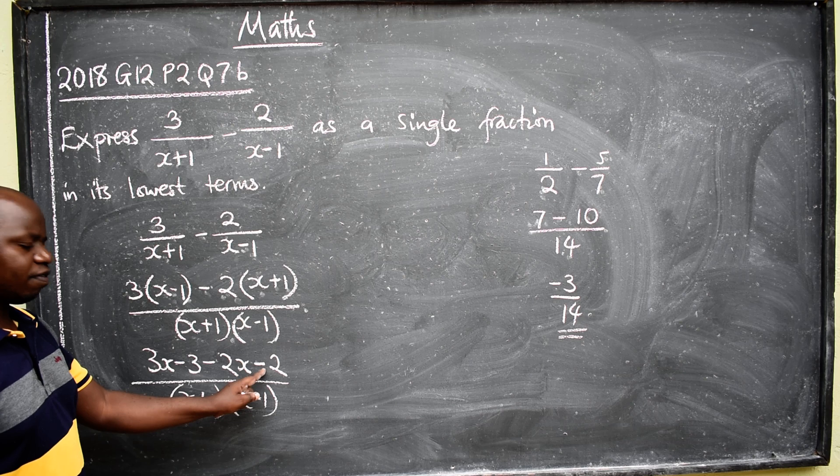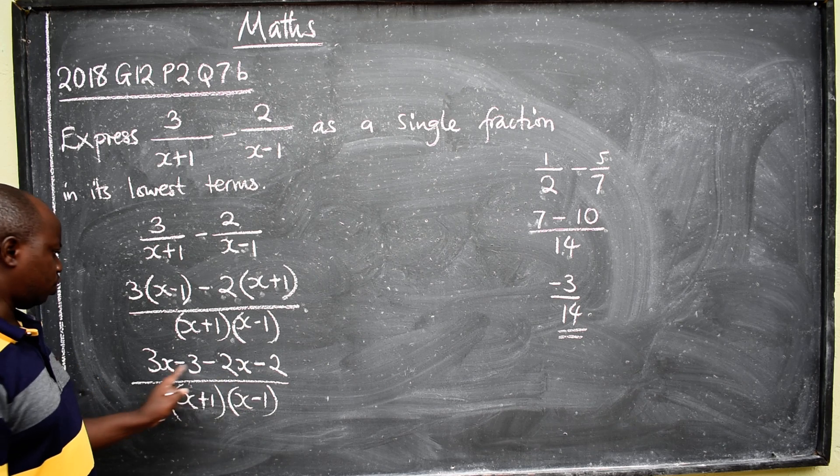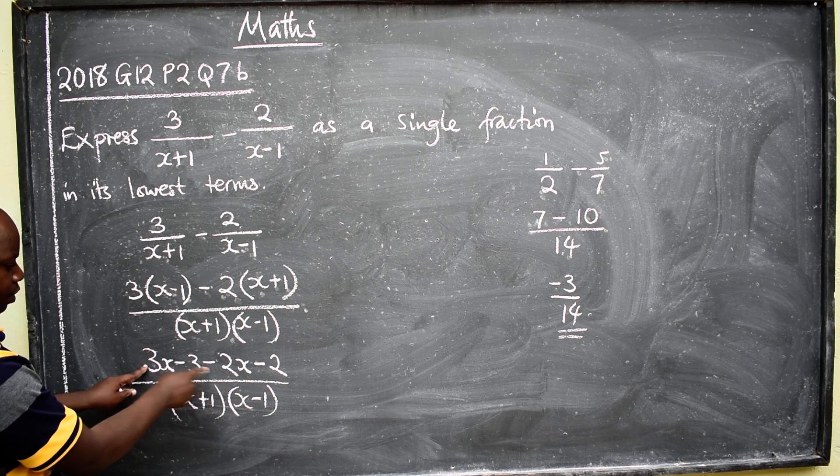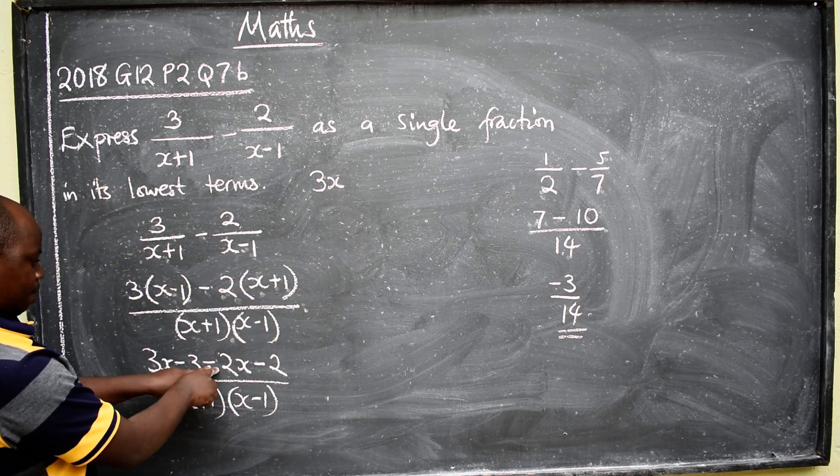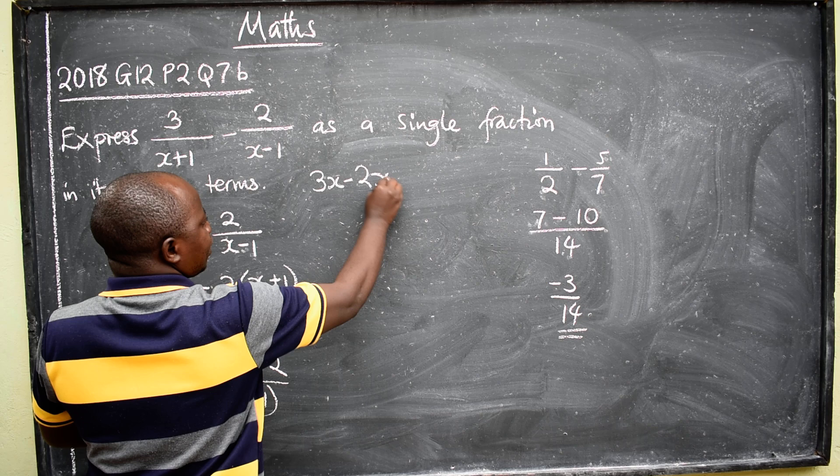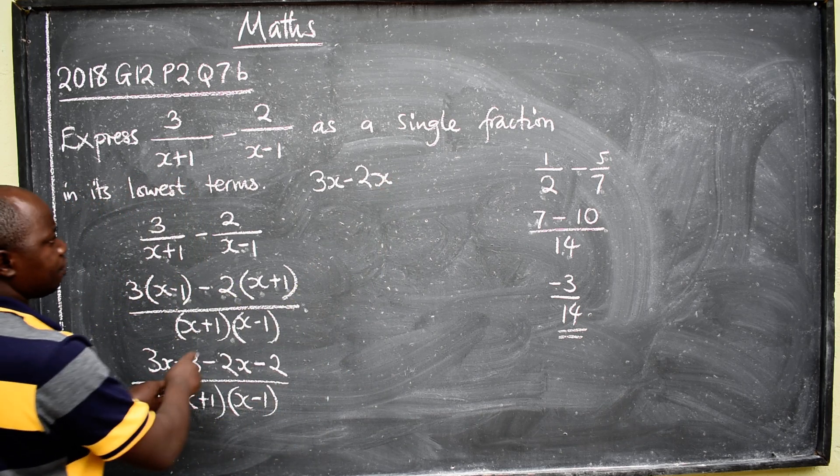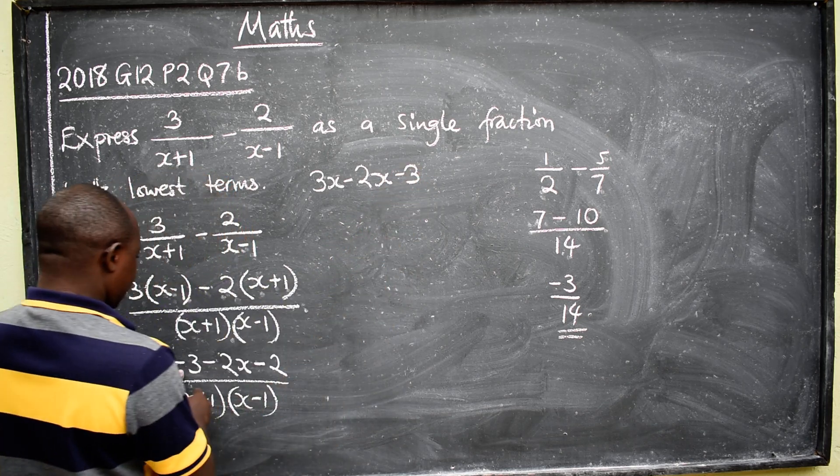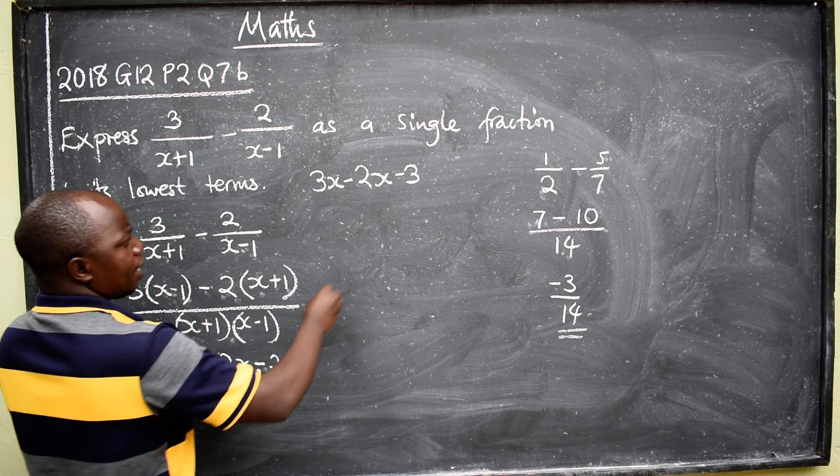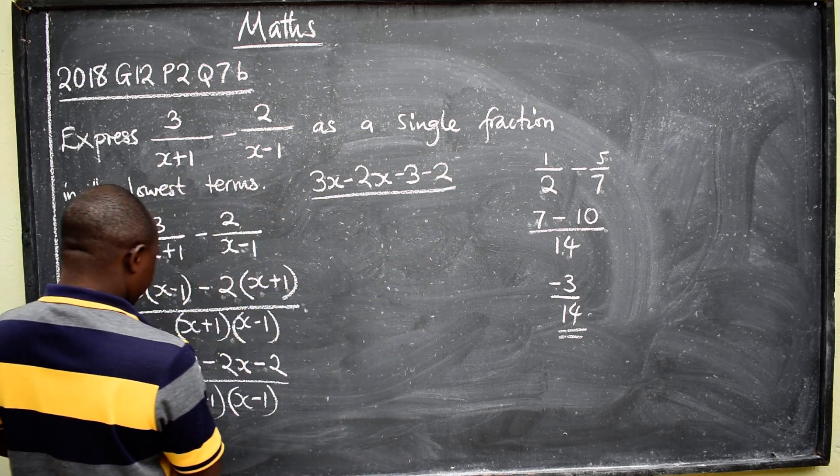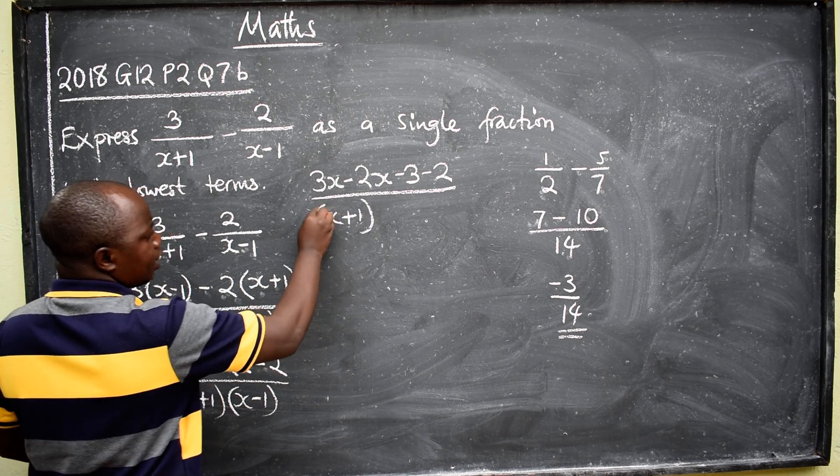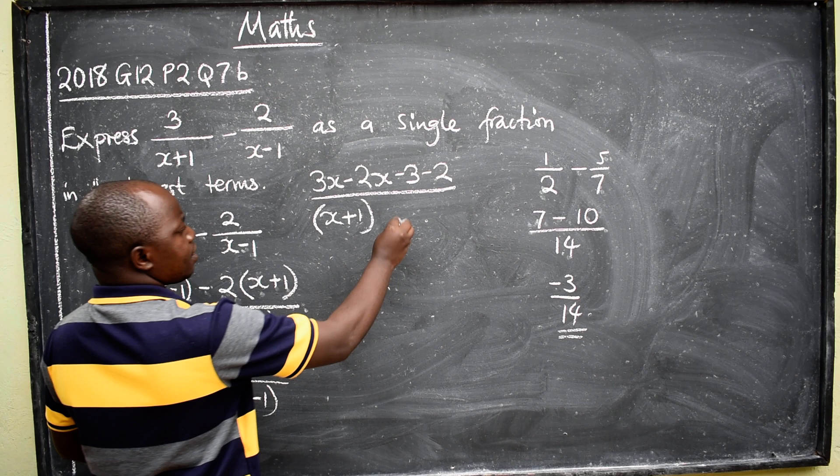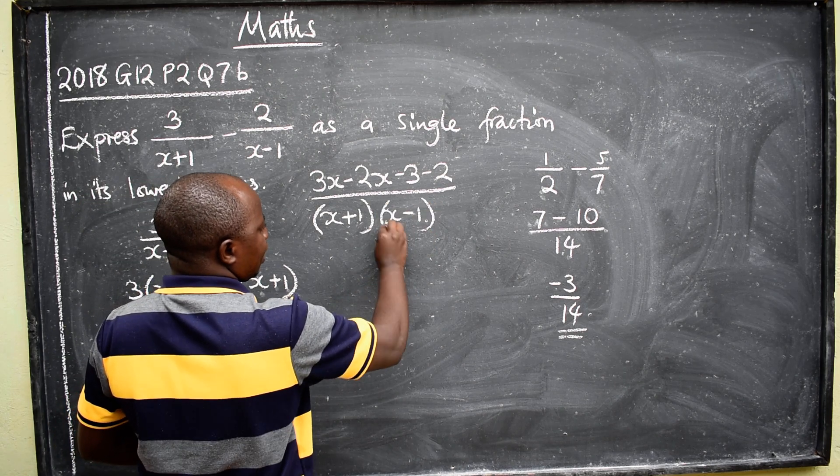What next? We have to next collection of like terms on top here. We have 3x, we have 2x. So we are going to say 3x minus 2x. Negative 3 here, negative 3, negative 2, negative 2. Over we have got this, x plus 1, then x minus 1.